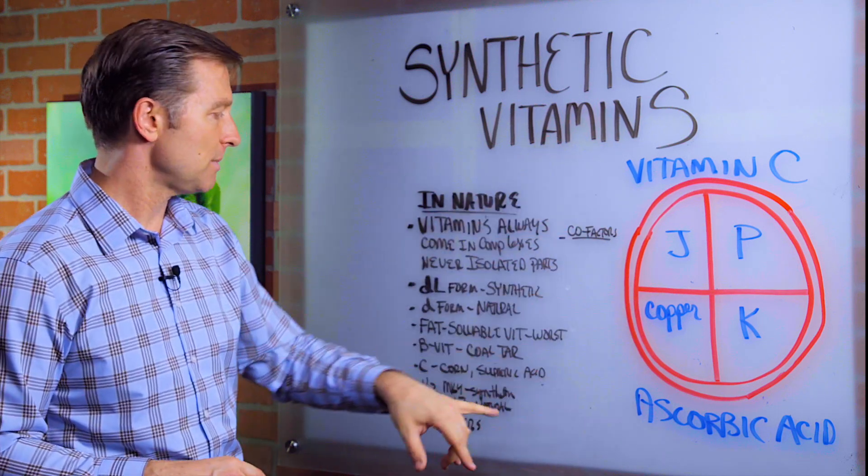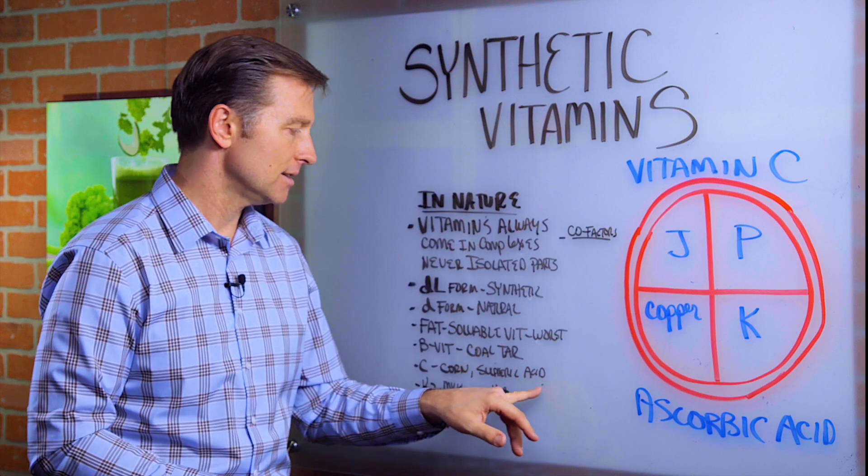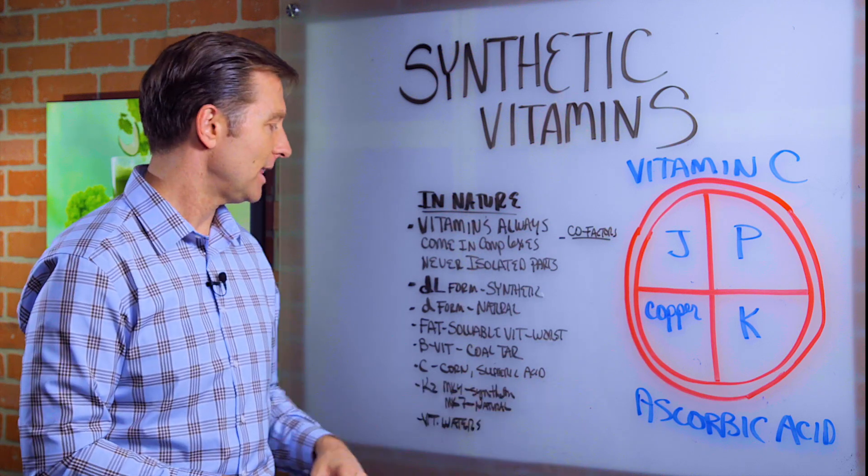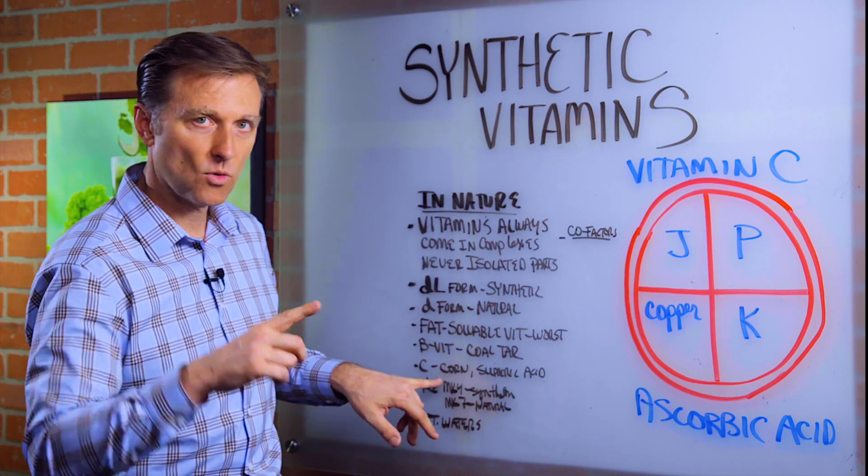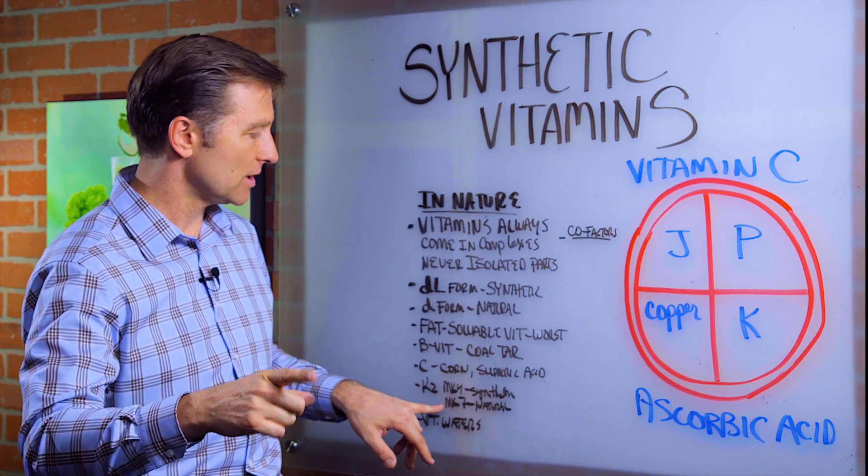Vitamin C synthetically is made from corn, which is GMO, and sulfuric acid. I mean, corn has very little vitamin C, if any, but they can make it synthetically. Vitamin K2 has a synthetic version called MK4. In my product, I use MK7, which is natural. I don't use the synthetic.